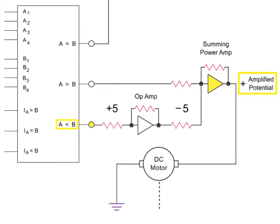The output of the summing amp is applied directly to the DC motor of the actuator. Positive potential provides clockwise rotation, and negative potential provides counterclockwise rotation.